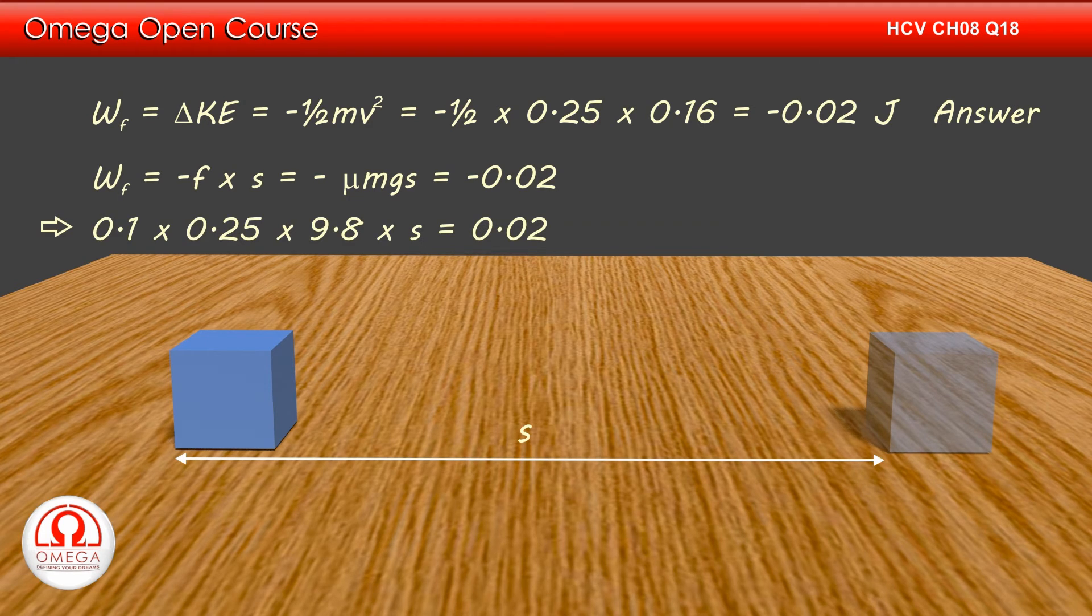Putting the values of mu, m, and g, we get 0.1 into 0.25 into 9.8 into s is equal to 0.02. Solving we get s is equal to 0.082 meters or 8.2 centimeters. This is answer to the second part of the question.